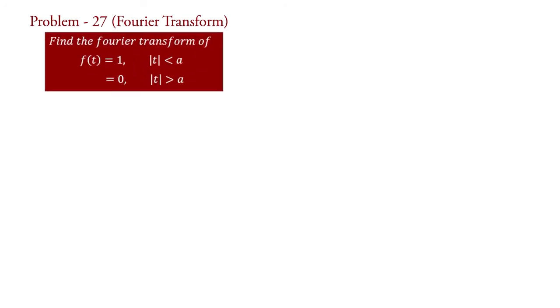Find the Fourier transform of f(t) = 1 for |t| < a, and f(t) = 0 for |t| > a.